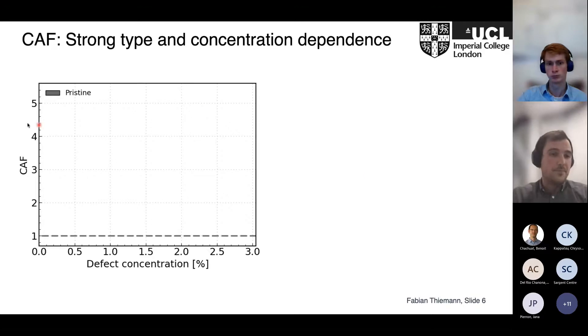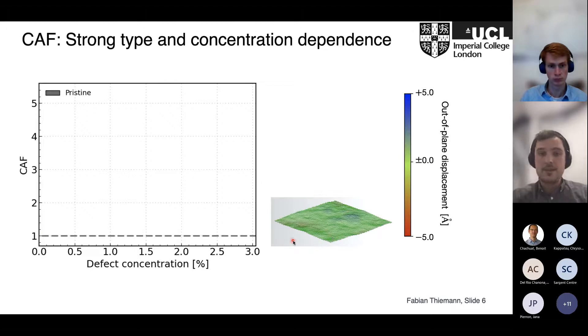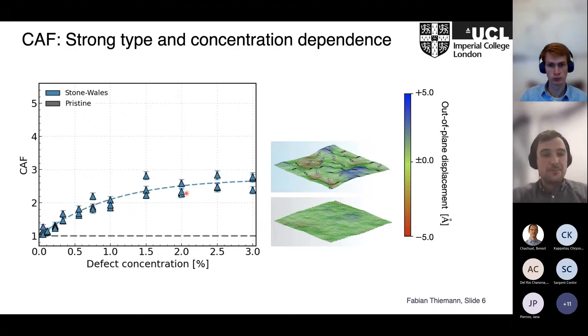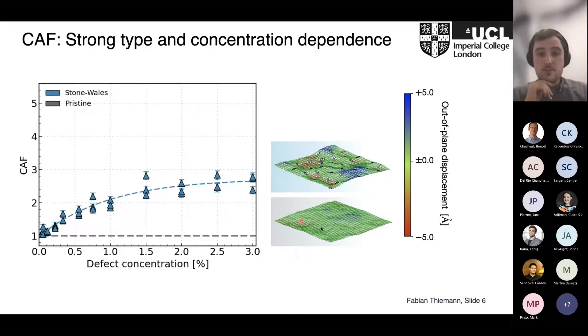Here I plot the CAF as a function of defect concentration. This line corresponds to the pristine case, always at one. Here's a nice snapshot colored according to out-of-plane displacements. When we now introduce Stone-Wales defects, shown here, at the highest concentrations ranging to three percent, we can get a CAF of three, which corresponds to a three-fold enhancement of the corrugation. We can also see this in this snapshot, which is way more structured and wrinkled than the pristine case. By the way, each of these markers corresponds to one initial orientation and spatial arrangement of the defect, so we make sure this is not dependent on how we randomly assign them on the sheet.